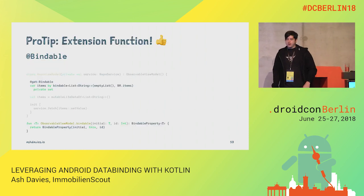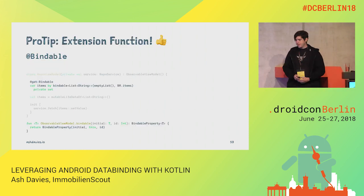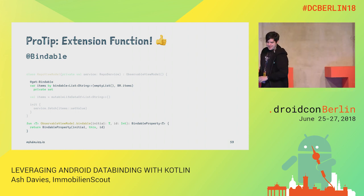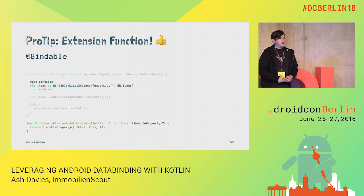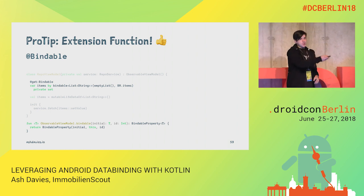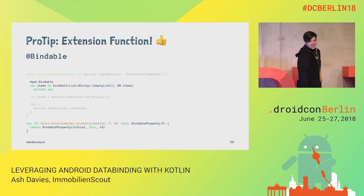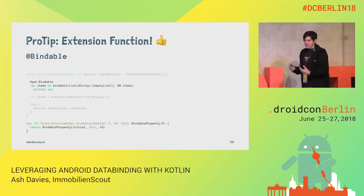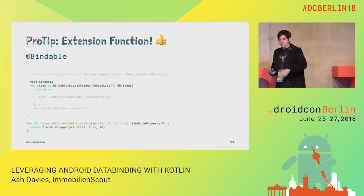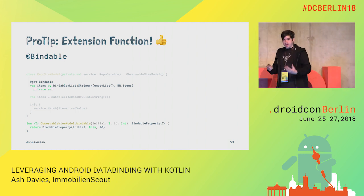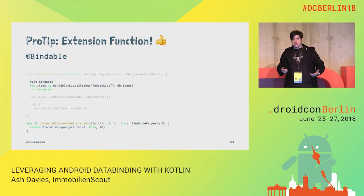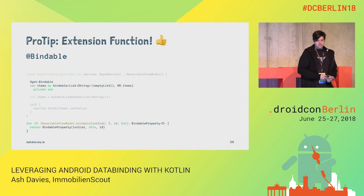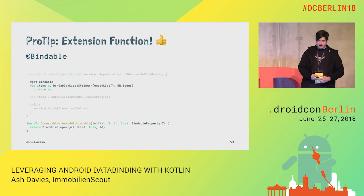We can apply this with an extension function. We've got the @get:Bindable annotation on our items to make sure the bindable annotation is applied to the getter, to let data binding know this property will or might change. Then we pass in the identifier BR.items, which is generated by our data binding annotation processor. By the way, the annotation processor does not need to be added as a kapt annotation processor in your build.gradle — it will be done so by the Android Gradle plugin.